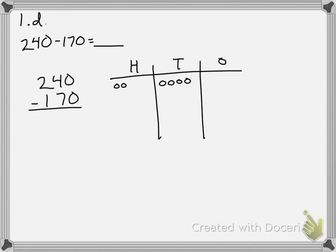Problem 1d asks us to do 240 minus 170. I'm going to use two strategies just to demonstrate how they relate. In the vertical form: zero minus zero is zero, then four minus seven — I can't do that, so I unbundle one hundred, leaving one hundred left, and move all ten tens over. That gives me 14 minus 7 which is 7, and 1 minus 1 which is 0, so I end up with 70.